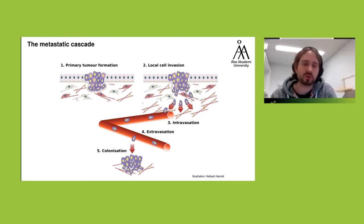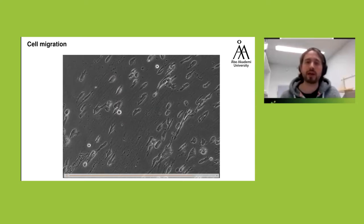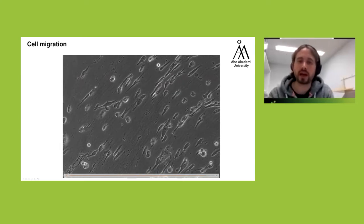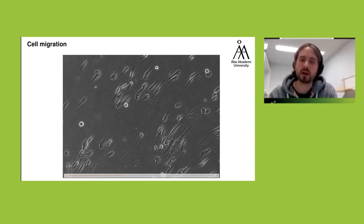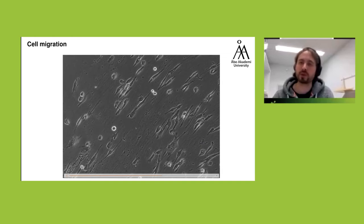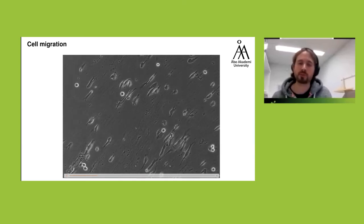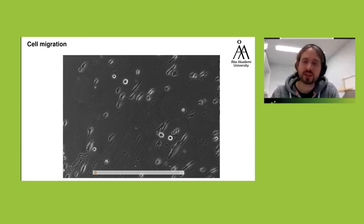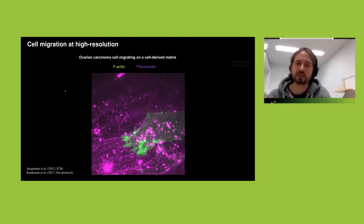From my PhD through my postdoc and now as an independent PI, we've been trying to find ways to observe using microscopy technologies how cancer cells are able to do this. We can analyze migration properties of breast cancer cells on cell-derived matrices — extracellular matrices produced by fibroblasts — to see how cancer cells interact and migrate. We can then manipulate signaling pathways to see how cell migration is regulated. But what we're really interested in is high-resolution microscopy to better understand the structures and processes cancer cells use as they migrate.